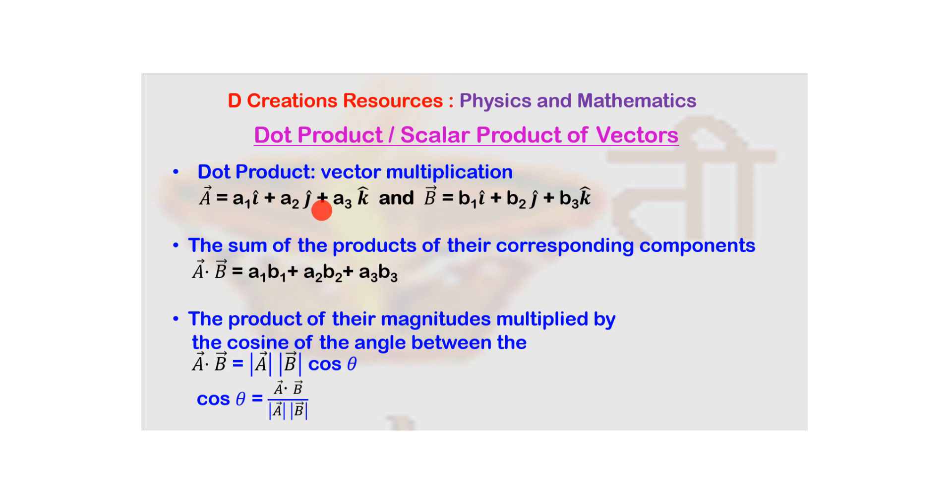Similarly in case of j cap, A2 B2. And third, in case of k cap, A3 B3. So you have three terms: A1 B1, A2 B2, A3 B3. And now you have to add them up. So the dot product is going to be equal to A1 B1 plus A2 B2 plus A3 B3.